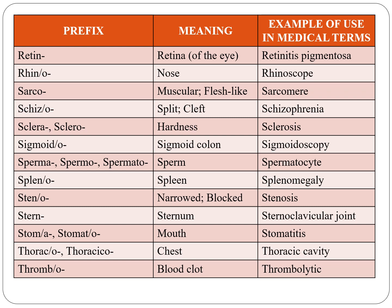Rhino indicates nose, as in rhinoscope. Sarco indicates muscular or flesh-like, for example sarcoma. Schizo indicates split or cleft, for example schizophrenia. Sclero or sclera indicates hardness, for example sclerosis — that is hardening.